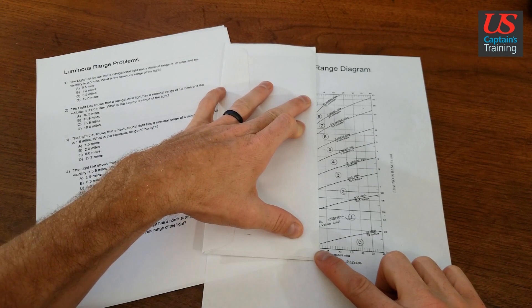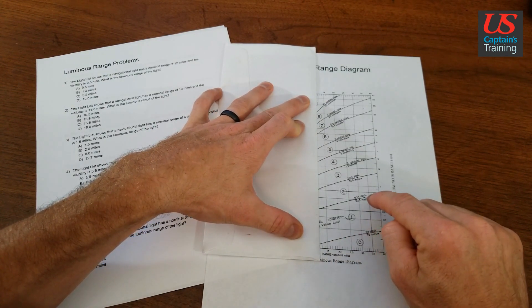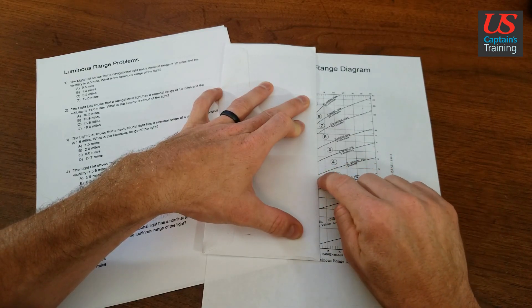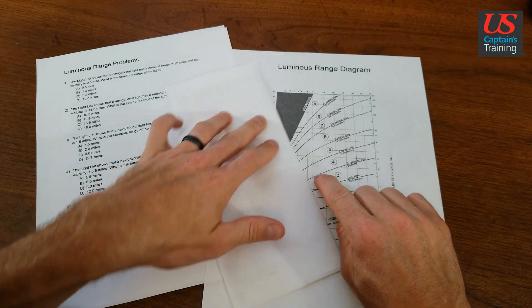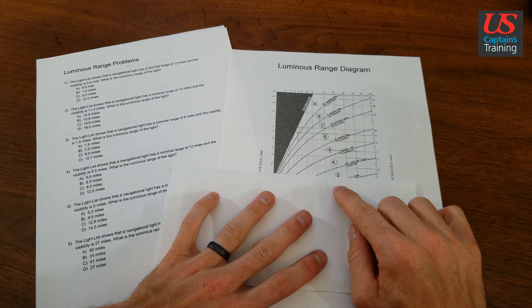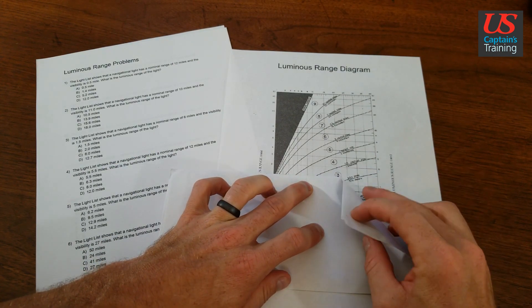And now we're looking for a visibility of 0.5, half a nautical mile. So where it intersects is right there. And now we take this over and we're looking at one point.